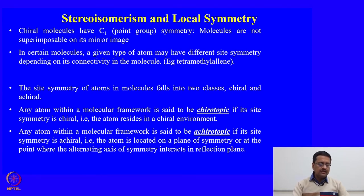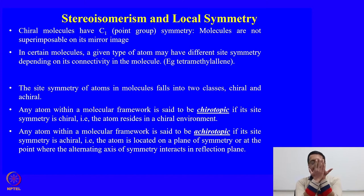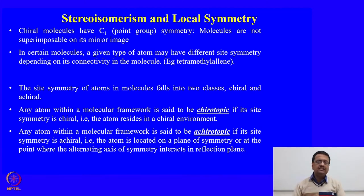What we know about chiral molecules is that they have C1 point group symmetry. Molecules are not superimposable on their mirror image — just like the right hand and left hand cannot be superimposed. Chiral molecules have C1 symmetry and cannot be superimposed on their mirror image.